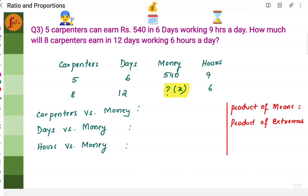Now for the next problem: 5 carpenters can earn rupees 540 in 6 days working 9 hours per day. How much will 8 carpenters earn in 12 days working 6 hours a day? We identify the parameters: carpenters, days, money, and hours — so we have 4 parameters. We put the proportion values: 5 carpenters, 540 rupees, 6 days, 9 hours.